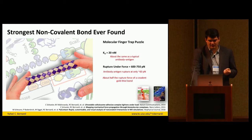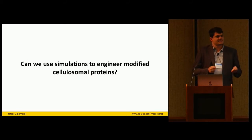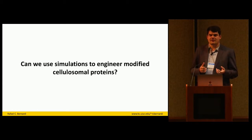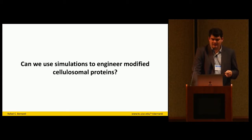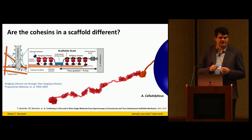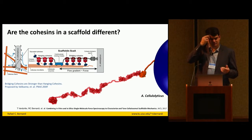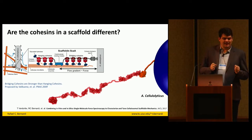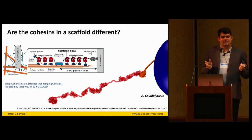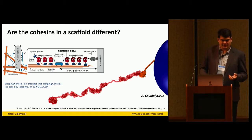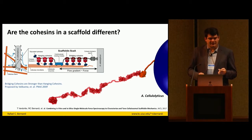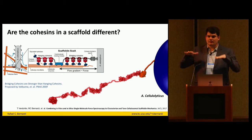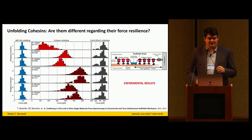Then we started to think: can we use the simulations to engineer these proteins? Can we change them and better understand how the system works? We started looking at another cellulosome from Acetivibrio cellulolyticus, which has seven cohesins. We knew they were very similar, but a 2009 paper suggested they should differ in force resilience. Using a new parallel technique developed by the Hermann Gaube group, we could really compare the force strength they could handle.